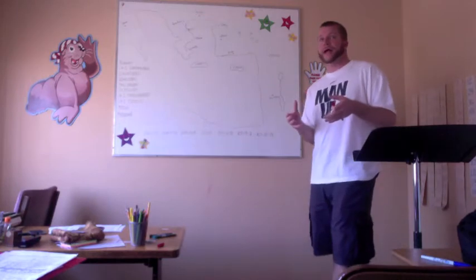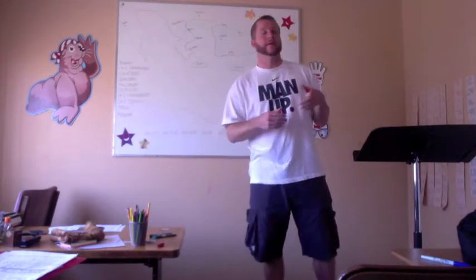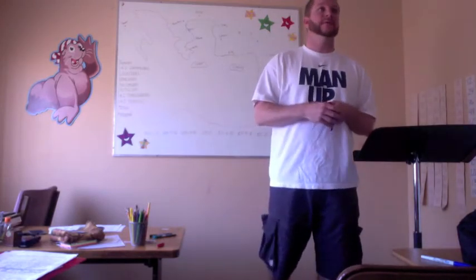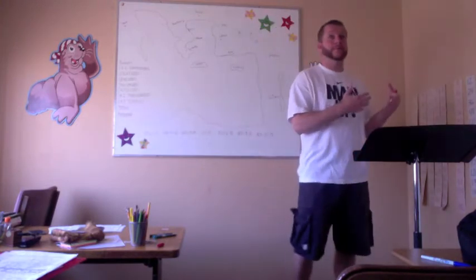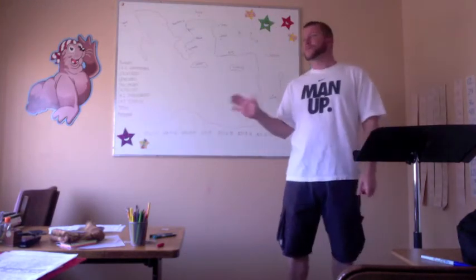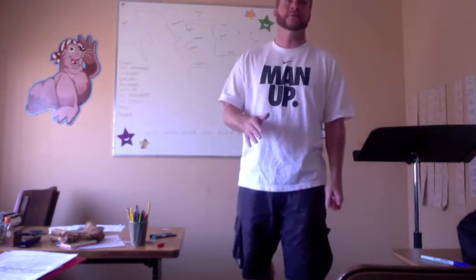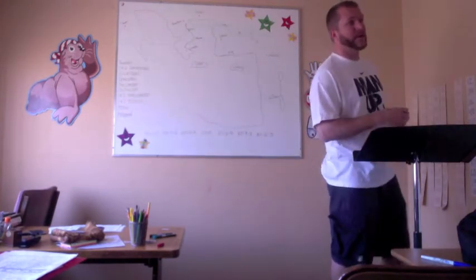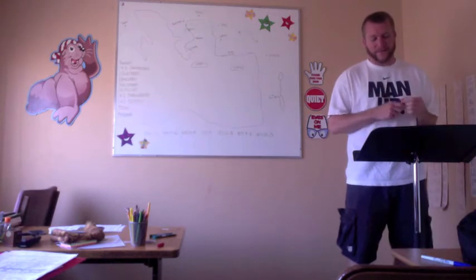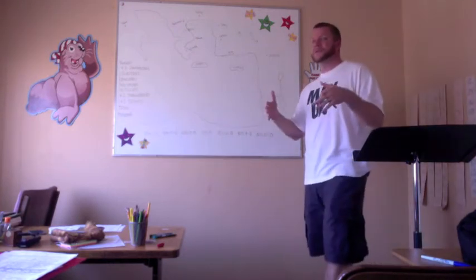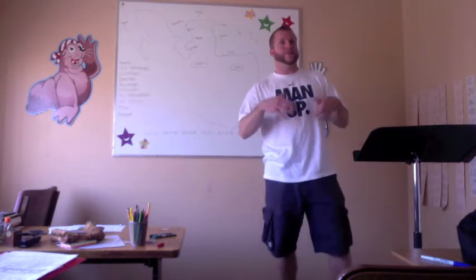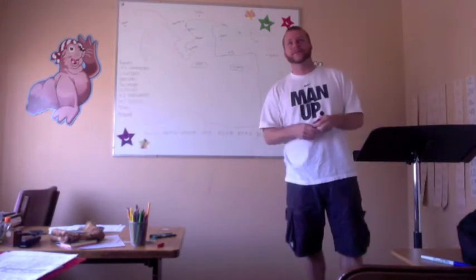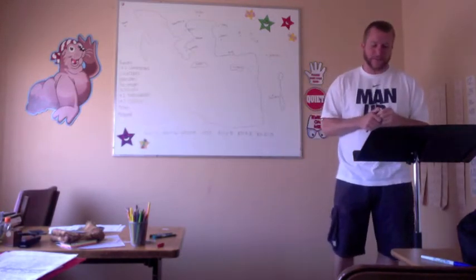If you remember the acronym AMPEC from the previous sessions: from Genesis to Malachi is the Anticipation of Christ; the Gospels are the Manifestation of Christ; the book of Acts is the Proclamation of Christ; the epistles are the Explanation of Christ; and finally in the book of Revelation, we have the Consummation of Christ. Keep those five Christ-centered divisions in mind as we walk through the New Testament.